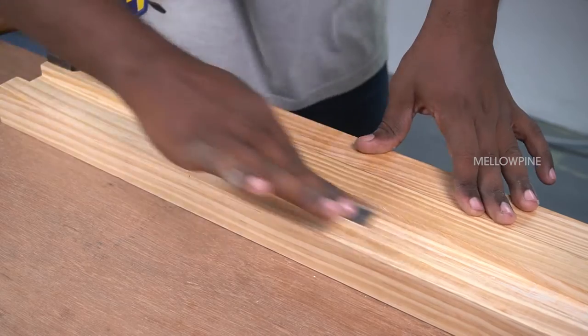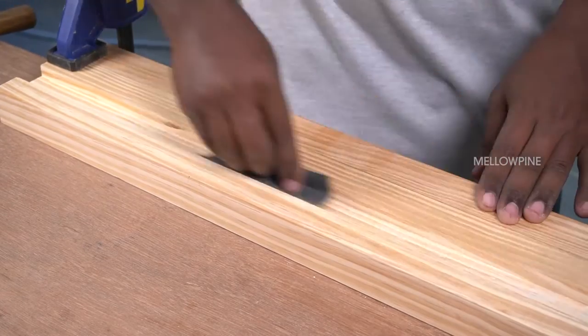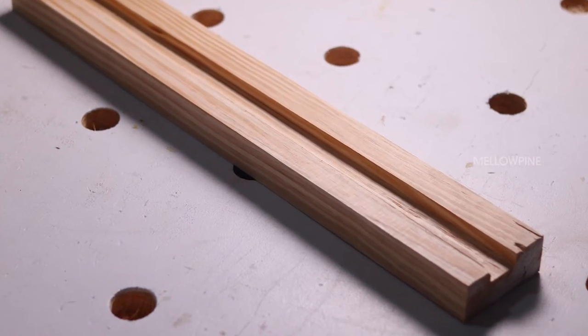Once you're done chiseling, use sandpaper to smooth out the rough edges. So with that, you've made a lengthwise groove in wood.